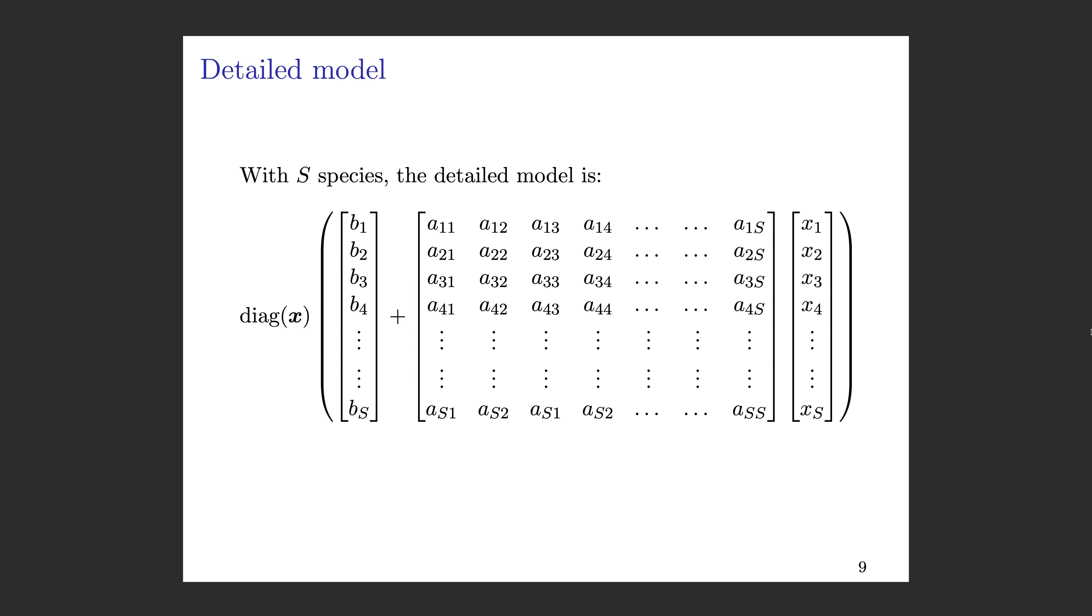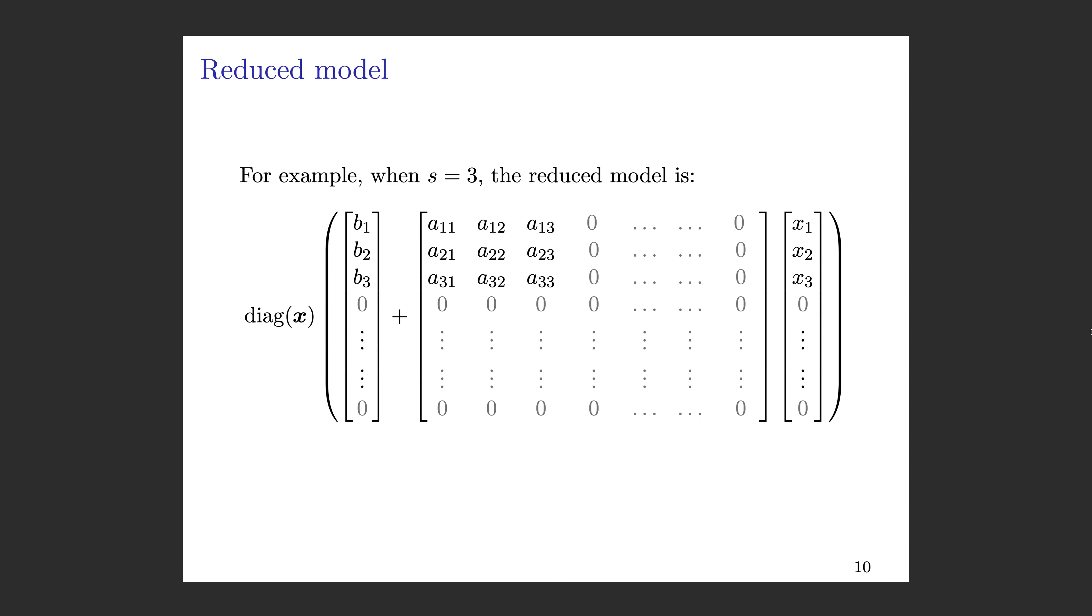Let's think again about this larger context. Consider that we have this detailed model that's made up of big S species—big S could be 10, 20, 100, whatever you want. This is what the detailed model looks like. We have big S squared interaction terms. We'll think about doing reductions down to, for example, little s equals three species.